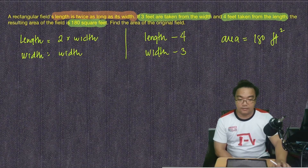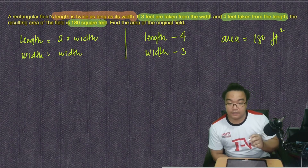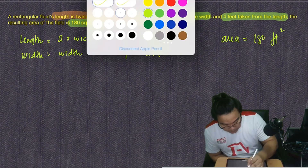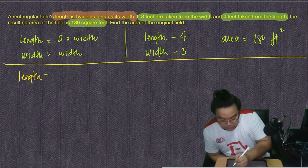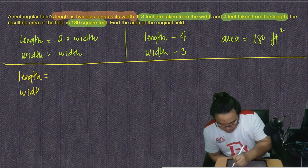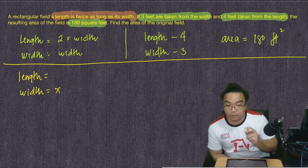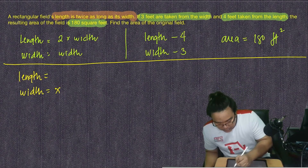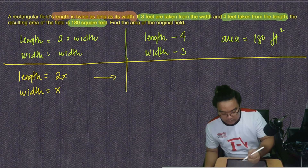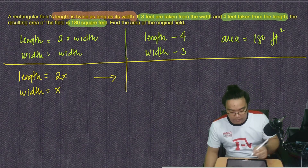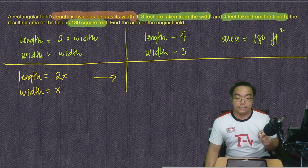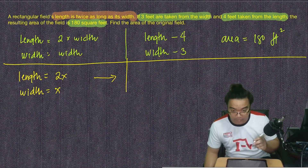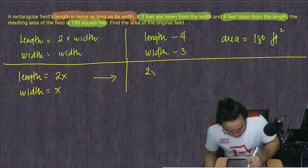Now let's analyze and combine the information we obtained. We know the length can be defined using the width, so let's represent the width as variable x. Since the width is x, the length is 2x. From the second statement, if the length is deducted by 4 and the width by 3, the area becomes 180 square feet — so the new length is 2x minus 4 and the new width is x minus 3.